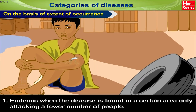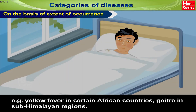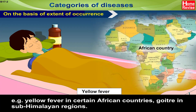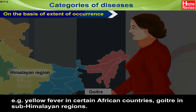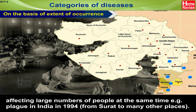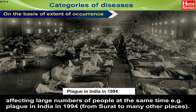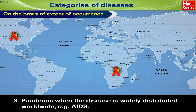Categories of diseases on the basis of extent of occurrence. Number one: endemic — when the disease is found in a certain area only, attacking a few number of people. For example, yellow fever in certain African countries, goiter in sub-Himalayan regions. Number two: epidemic — when the disease breaks out and spreads from place to place, affecting a large number of people at the same time. For example, plague in India in 1994, spreading from Surat to many other places. Number three: pandemic — when the disease is widely distributed worldwide. For example, AIDS.